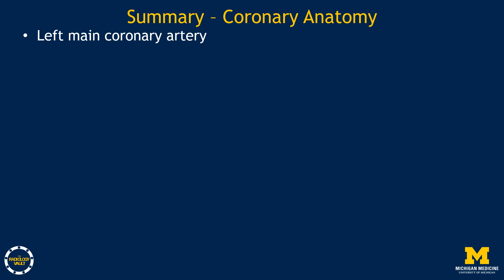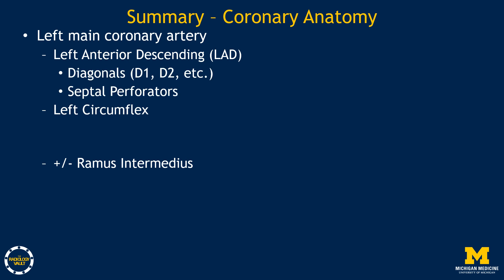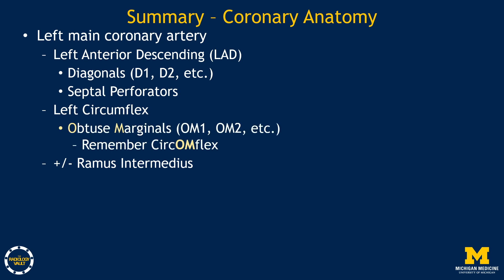To summarize: the left main coronary artery typically bifurcates into the LAD and the left circumflex artery. A normal variant is the left main trifurcation with a middle branch termed the ramus intermedius. Branches of the LAD include diagonal branches labeled D1, D2, etc., and septal perforators identified by their course diving into the septum. The left circumflex artery gives off obtuse marginal branches labeled OM1, OM2, etc. A helpful mnemonic: think of circumflex with OM in the middle for obtuse marginal.